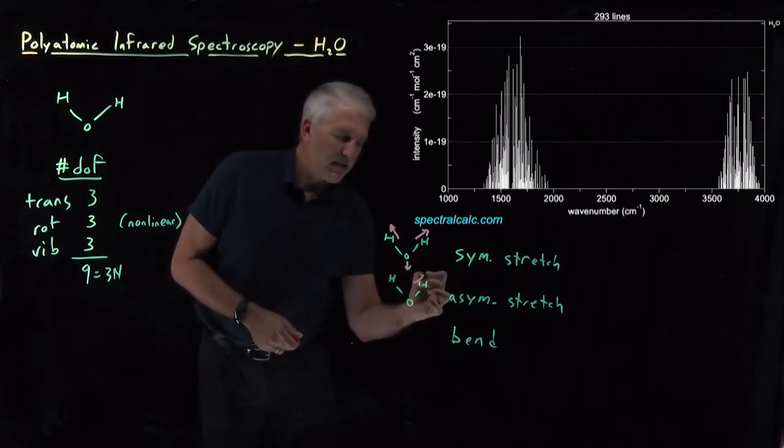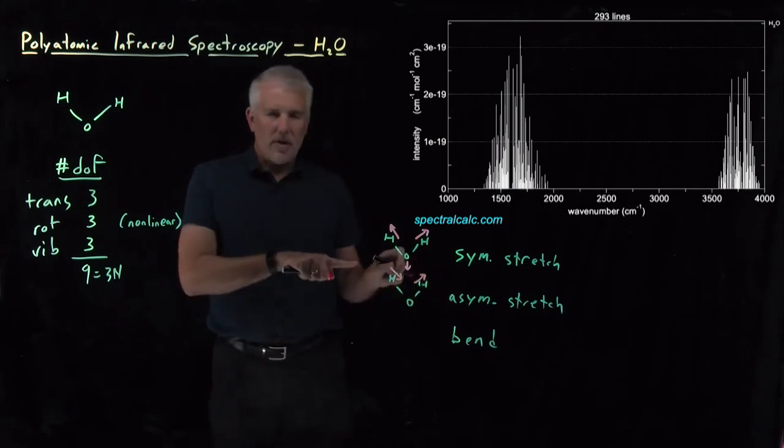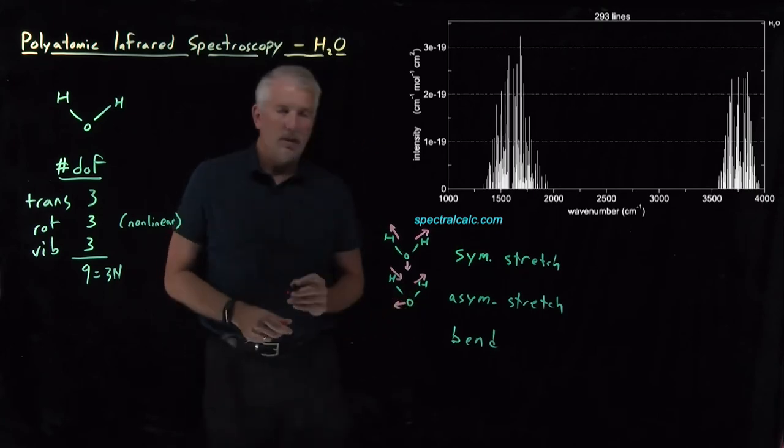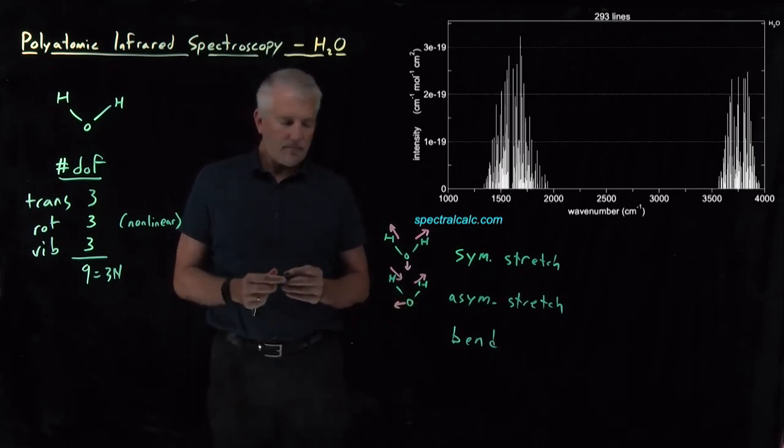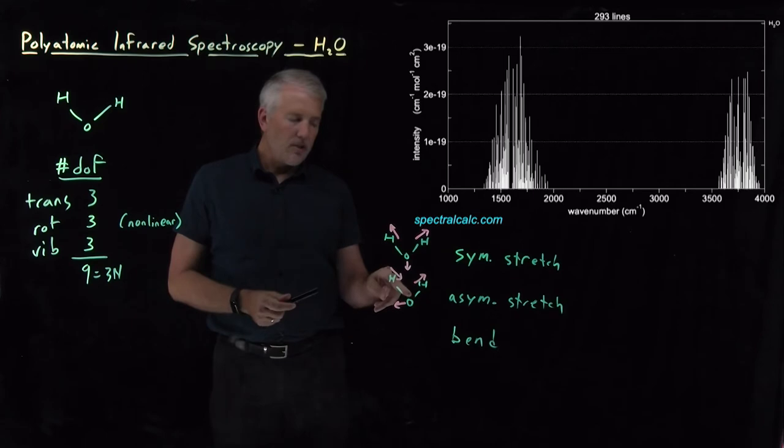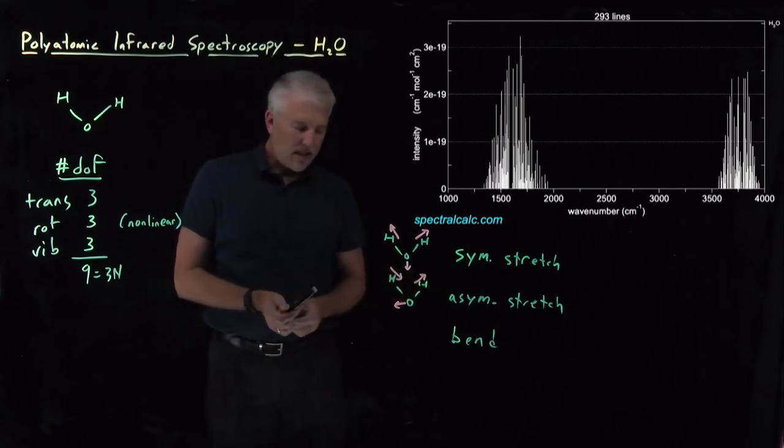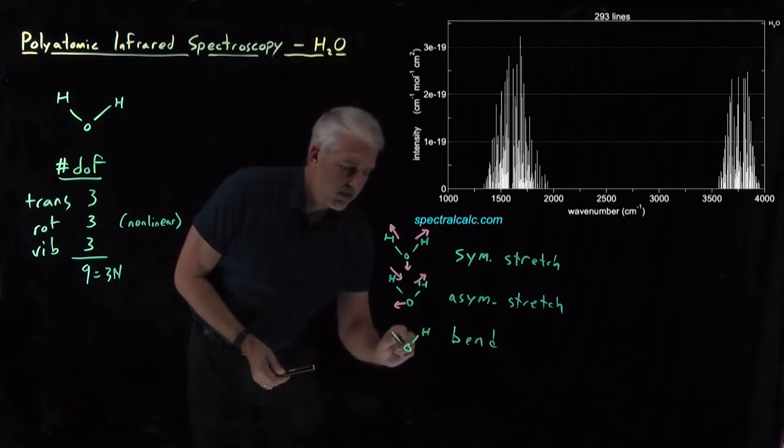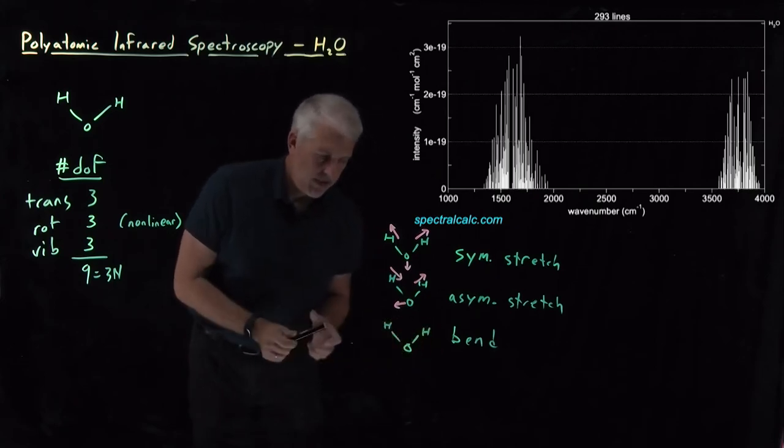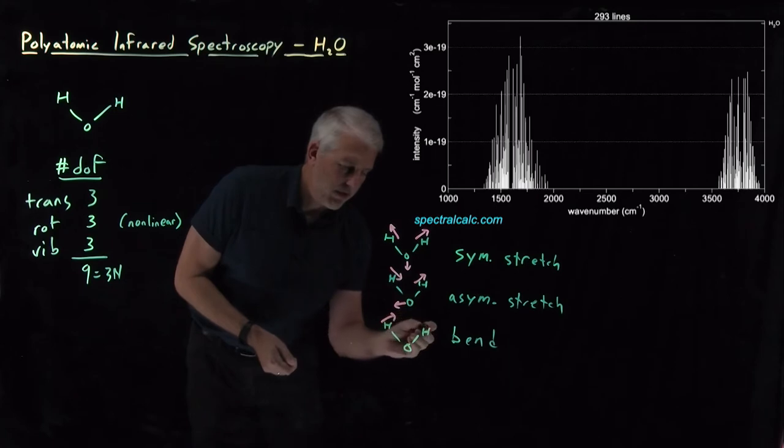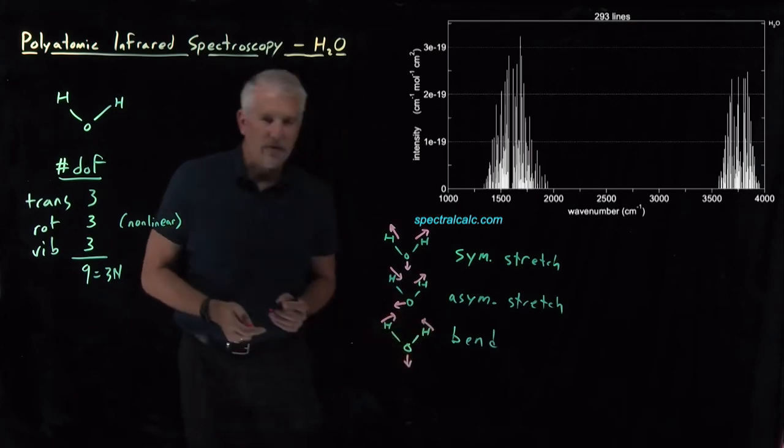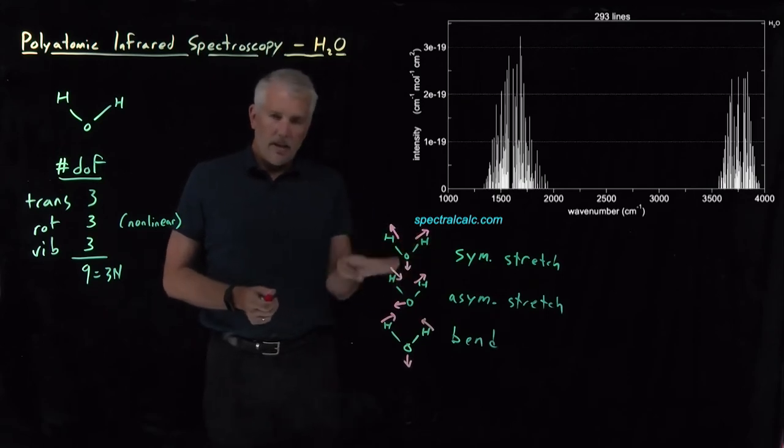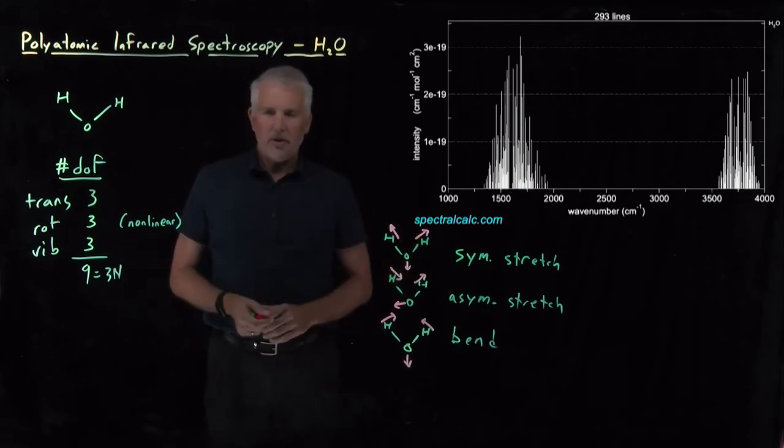If I lengthen this hydrogen at the same time as I shorten this hydrogen, the hydrogens in general have moved to the right, so the oxygen is going to have to move to the left to keep the center of mass stationary. That's going to involve shortening this bond while I lengthen that bond. Then the bending motion is going to involve the hydrogens moving towards each other and the oxygen moving slightly to keep the center of mass fixed. That's a description of the three different vibrational modes for water.